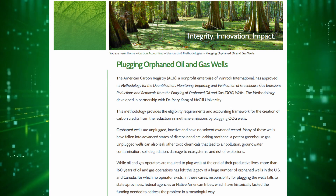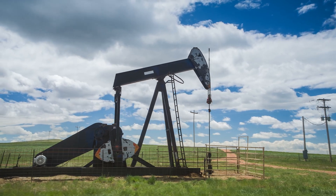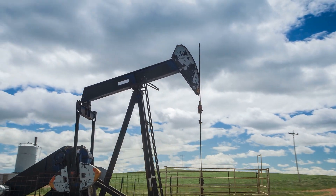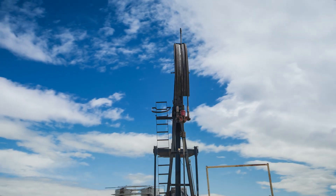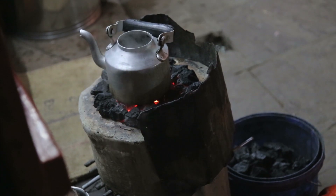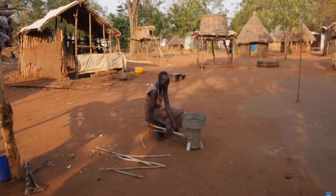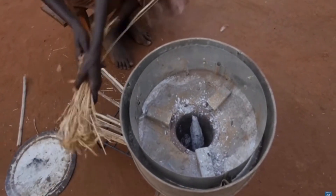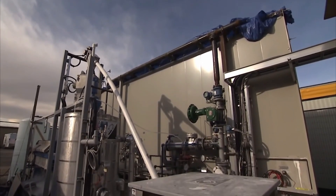A newly released methodology covers the plugging of orphaned oil and gas wells — abandoned or improperly sealed wells that can leak significant levels of methane, which is far more polluting than CO2. Another popular methodology is the production and distribution of high-efficiency cook stoves in developing regions, which reduces wood usage and other carbon-intensive fuels. Finally, carbon capture and storage (CCS) is one technology that generates carbon offsets by sequestering CO2 from the air, though it remains both capital-intensive and energy-intensive.